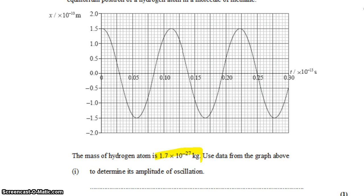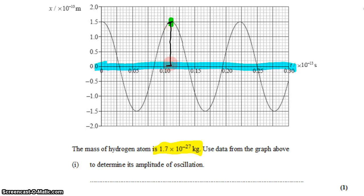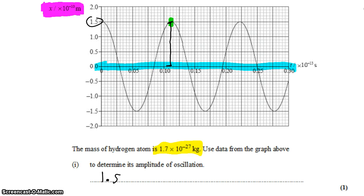The mass of the hydrogen atom is given. Use the data from the graph to determine the amplitude of the oscillation. We have to recognize that amplitude is the maximum displacement from equilibrium. We find how far from the equilibrium line we get, and reading from the graph that gives us 1.5. Checking our units, x is measured in meters times 10 to the negative 10, so our answer is 1.5 × 10⁻¹⁰ meters.